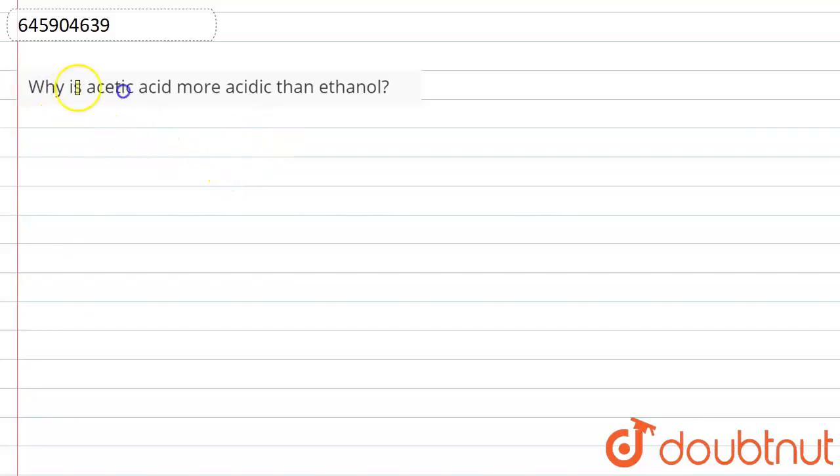So basically, acetic acid is CH3COOH and ethanol is CH3CH2OH. Now, how to compare the acid strength? For that, in aqueous solutions, we have to protonate these two acids.